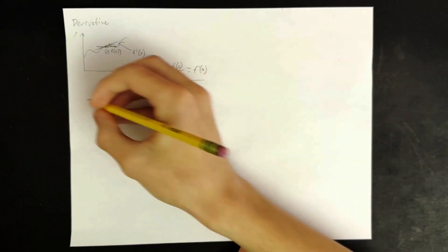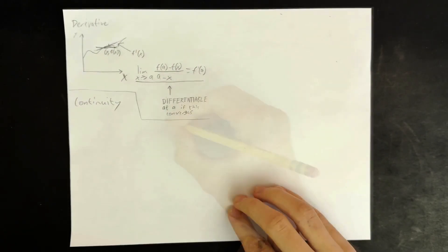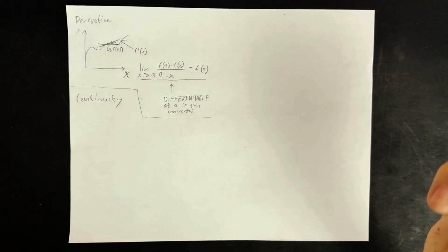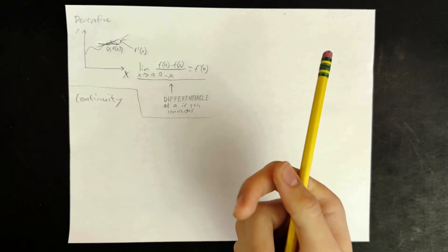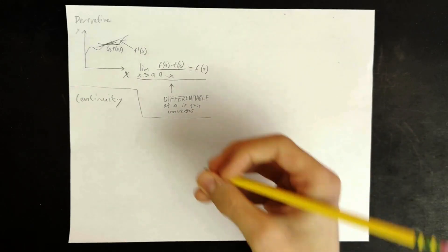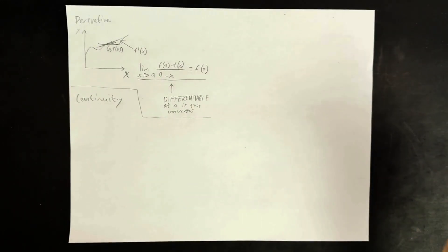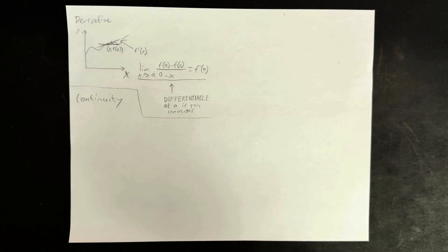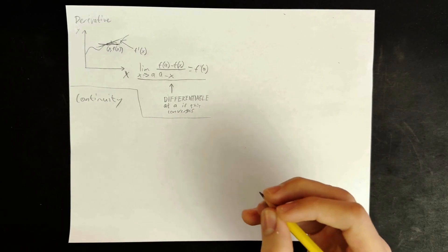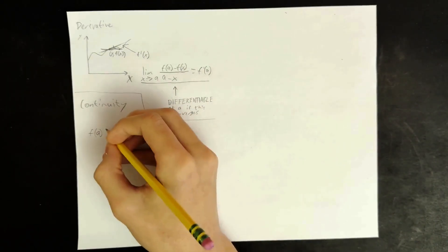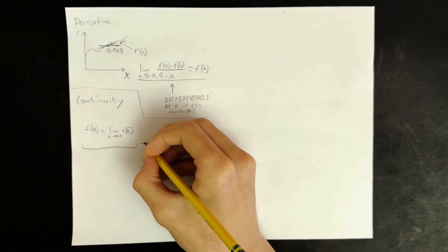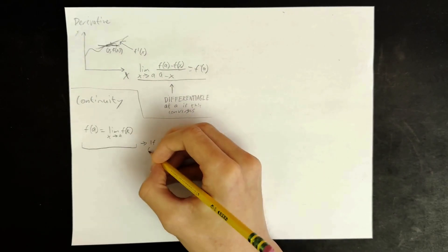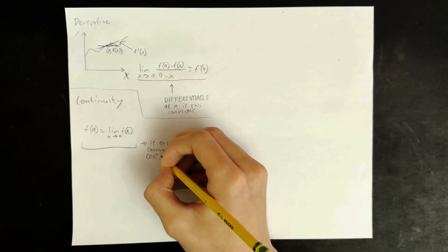The next thing we're going to have to define is continuity. Continuity seems pretty simple intuitively — it's one continuous line. But it's much harder to rigorously define. The way mathematicians do it is by saying a function is continuous at a if the value of the function at a is equal to the limit as x approaches a of the function.